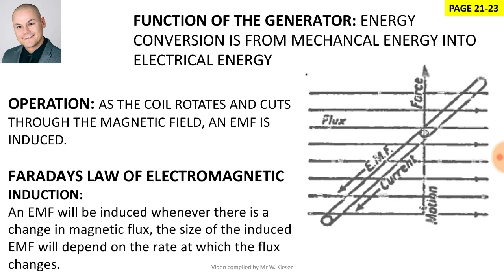The main function of a generator is to convert mechanical energy into electrical energy. In terms of the operation, we can use Faraday's law of electromagnetic induction, which states that whenever there is a change in magnetic flux, there will be an induced EMF. As the coil rotates and cuts through the magnetic lines of flux, an EMF is generated.